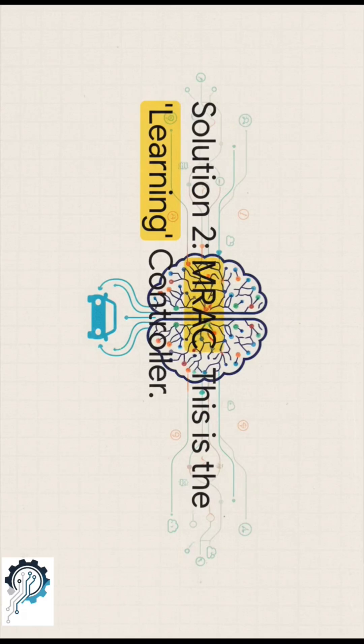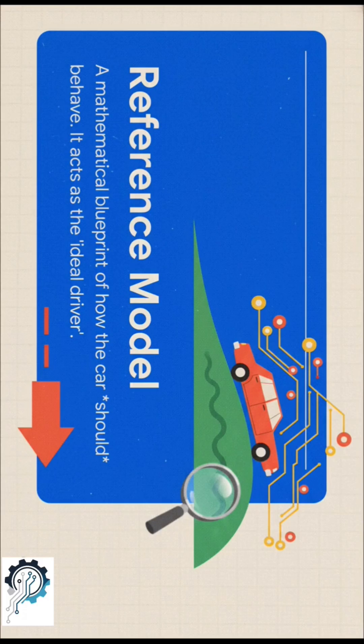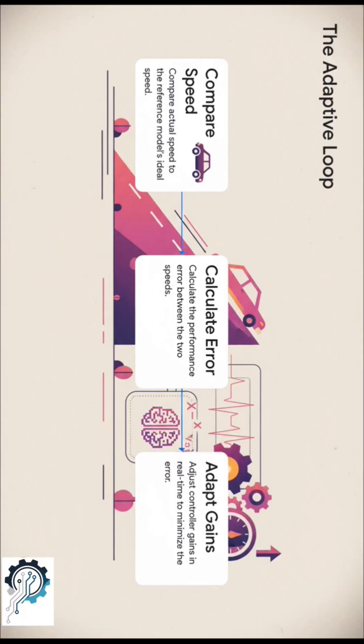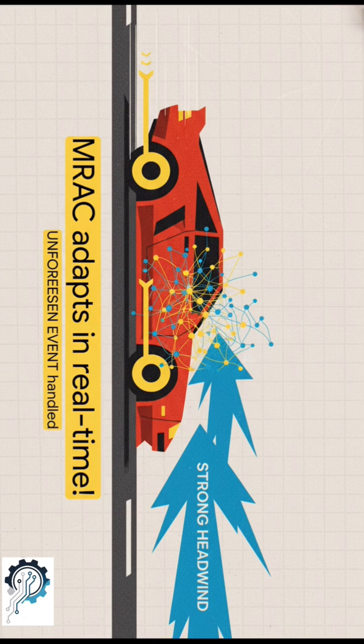But what if a controller could actually learn? That brings us to our second solution, MRAC. At its core is a reference model. Think of it as a perfect blueprint of the ideal driver. It's always comparing the car's actual speed to the ideal speed, then adjusting itself in real time. This is what's so cool. It can handle totally unforeseen things, like a strong headwind.